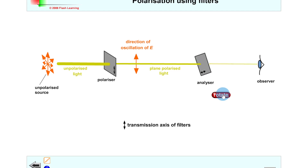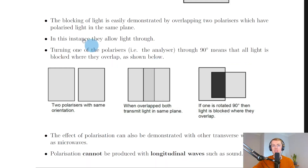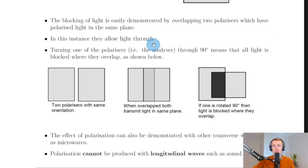So the light seen by the observer will go from maximum brightness to zero brightness and then back to maximum brightness again as you rotate the analyzer from zero to 90 degrees and then back to 180 degrees. Going back to the notes, it says the blocking of light is easily demonstrated by overlapping two polarizers which have polarized light in the same plane — in this instance they allow light through.